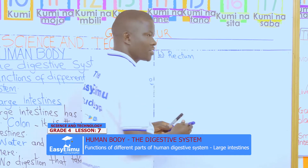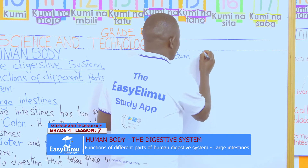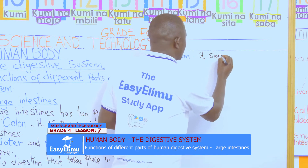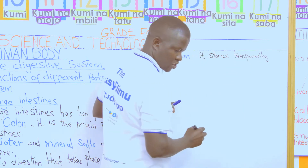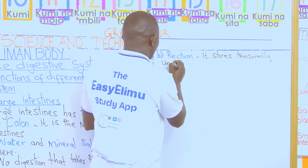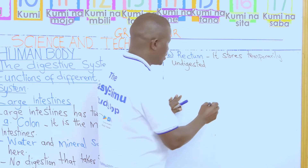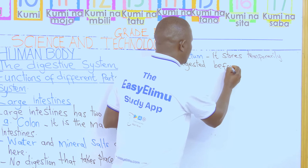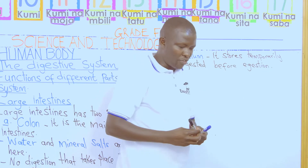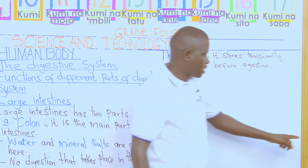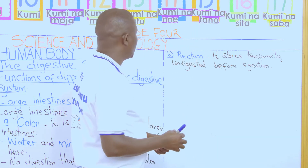In our groups, what is the function of the rectum? The rectum stores the undigested food temporarily. It stores temporarily undigested food, waiting to be taken away from our body. That is the work of the rectum. And the rectum is the lower part of the large intestine.